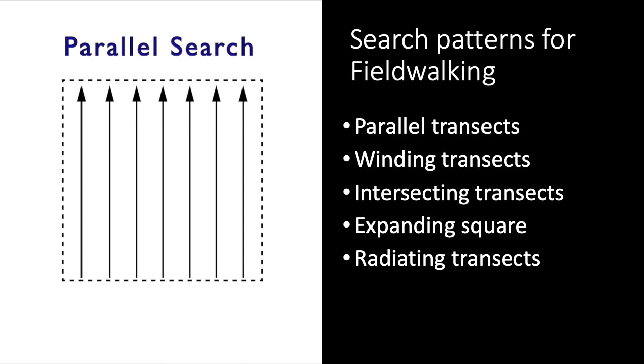The search patterns we use while carrying out a survey can also have a substantial impact on the results. Typically, those involve either some arrangement of transects or some arrangement of points on a grid. The size, shape, spacing, and orientation of these observation units can interact with the characteristics of the targets we're trying to find.